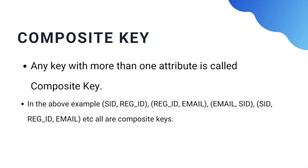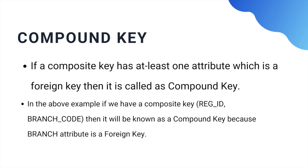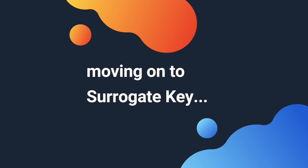A composite key has multiple attributes, hence all super keys with more than one attribute are also composite keys. In our case, Email & SID together, SID & Registration ID together, and Registration ID & Email together are all composite keys. If a composite key has one attribute which is a foreign key, then it is called a compound key.